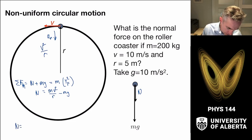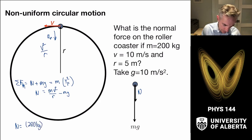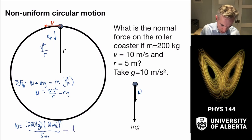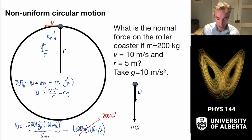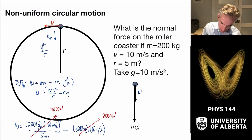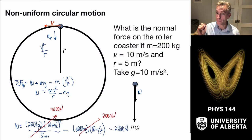Plugging in numbers: the normal force equals the mass of the roller coaster (200 kg) times v squared (10 m/s)² all over the radius (5 m), minus mg, which is 200 kg times 10 m/s². The mg term gives 2,000 newtons. The first term is 200 times 100 over 5, which gives 4,000 newtons. The difference is 2,000 newtons. Solved.